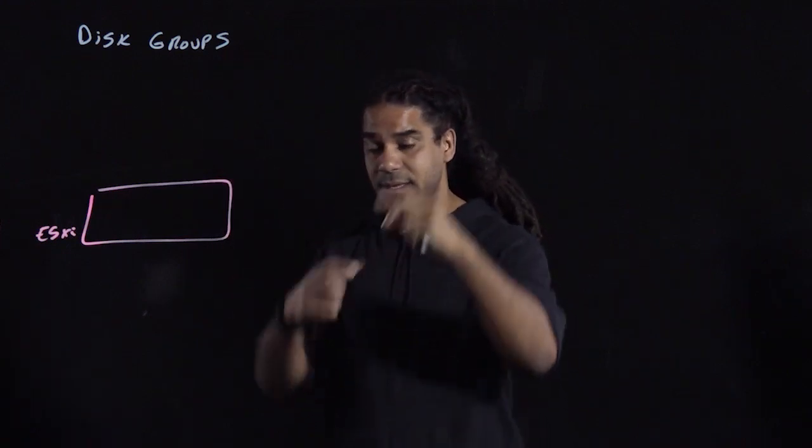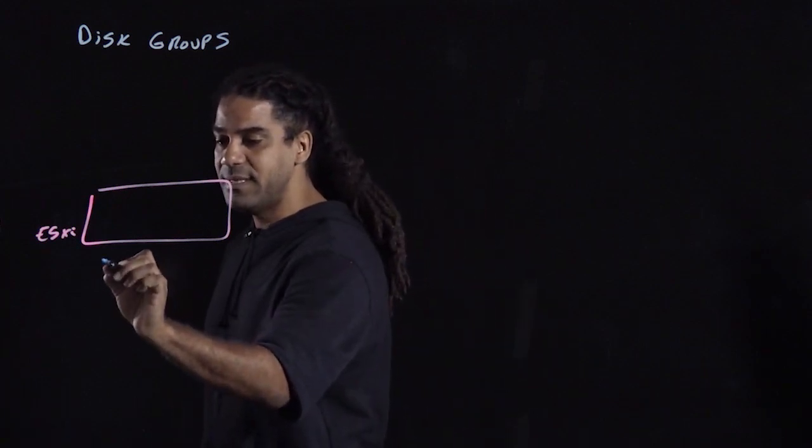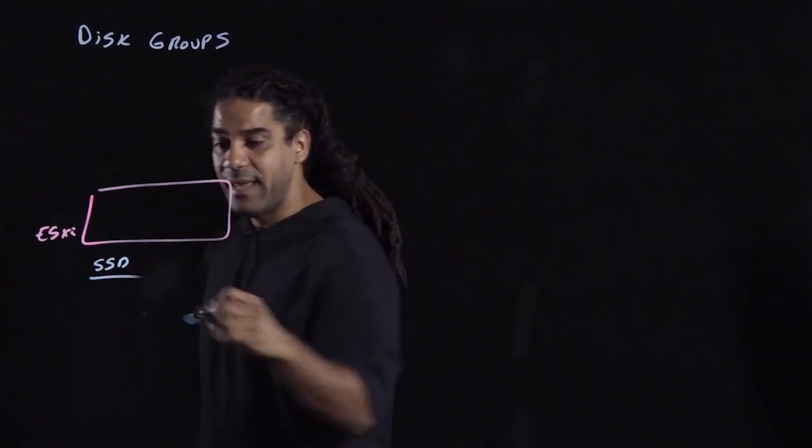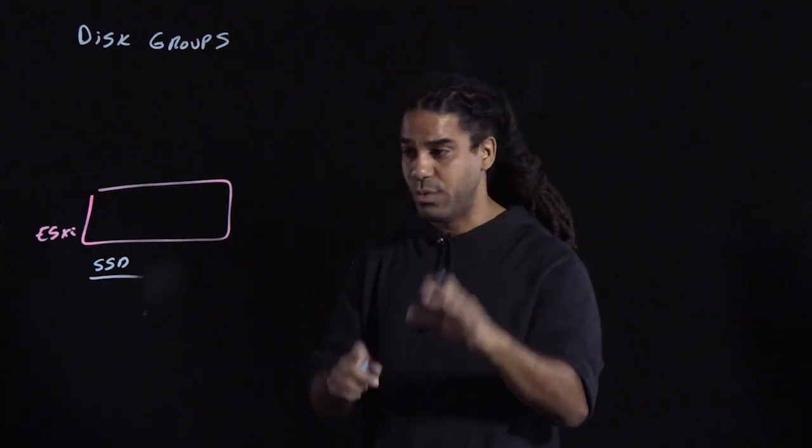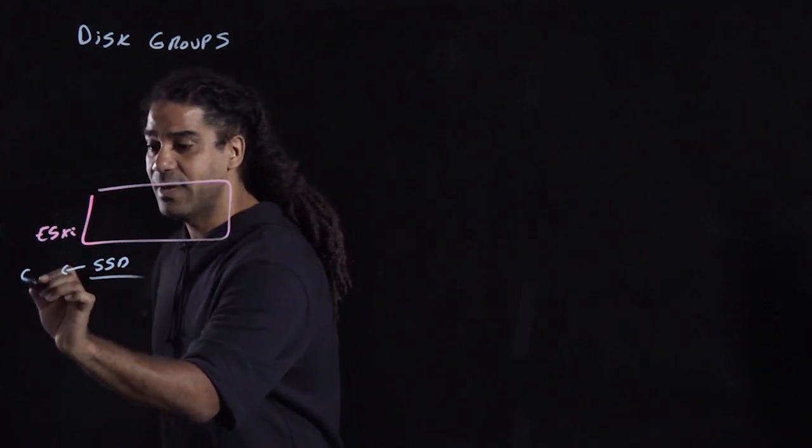In the disk group itself, there is an architecture where you have two levels. The first level is the cache level where you have an SSD, just one disk, no more. In a disk group, there's only a single cache drive.